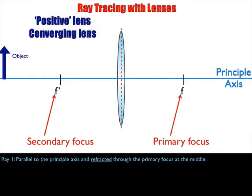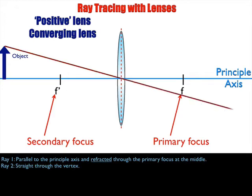The second ray is the easiest one to draw. It goes right through the vertex of the lens — the dead center middle of it. The incident ray and the refracted ray are all the same: a nice straight line in both directions, going an infinite distance. Combining those two rays, I can already figure out where the tip of the image is going to be.